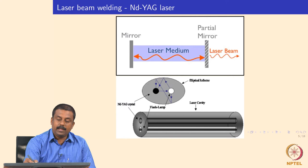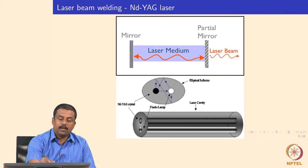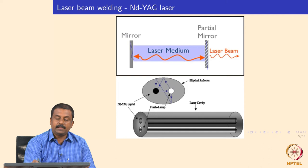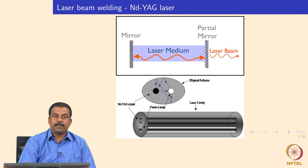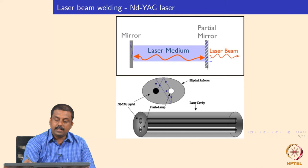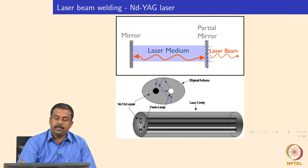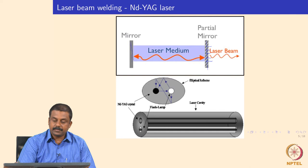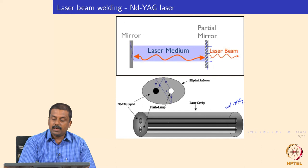For example, the gain medium is surrounded by two mirrors: one is completely reflective and the other is partially reflective. When the gain medium is excited, the released photons are accelerated and gain power by reflecting back and forth between these two mirrors. The partial mirror then sends out the excited, collimated, and coherent laser beam upon attaining its required power for the application. This is basically the schematic of the Nd:YAG laser source that generates laser light and sends it towards the welding setup.